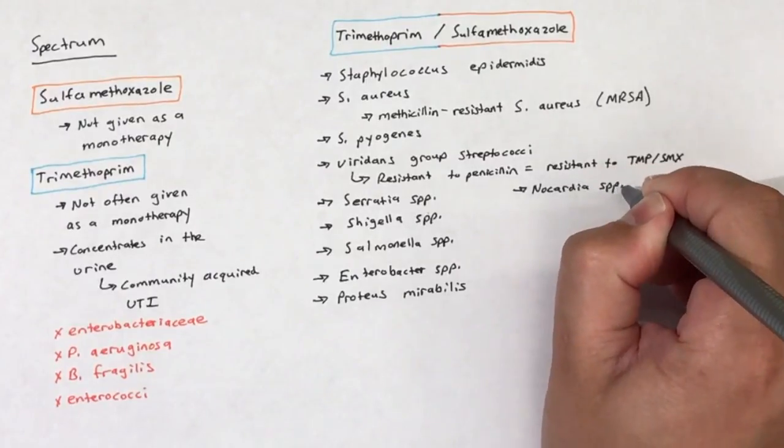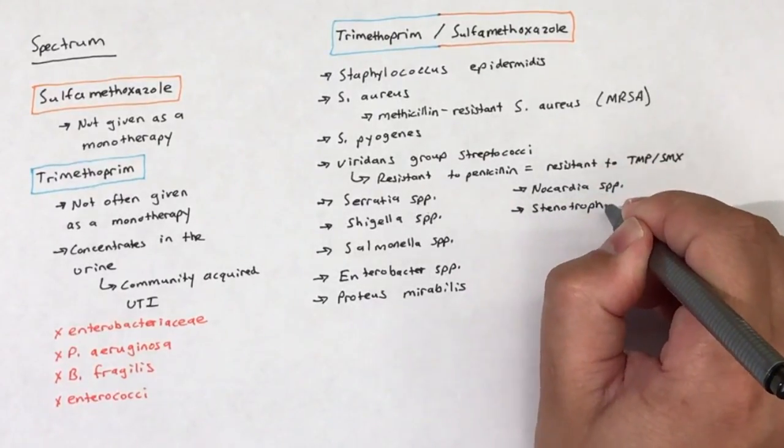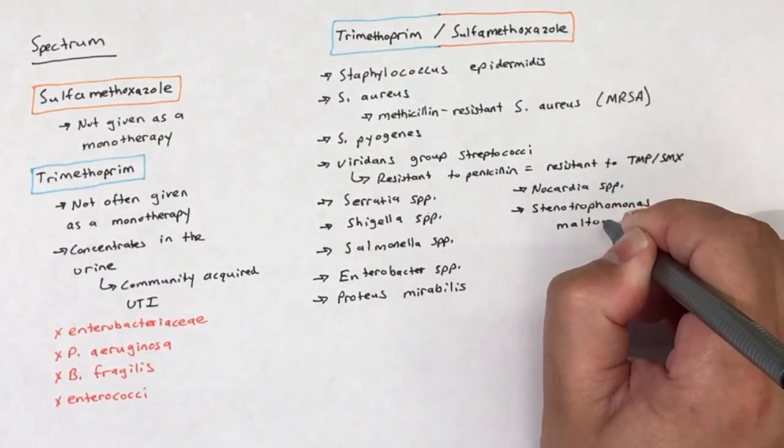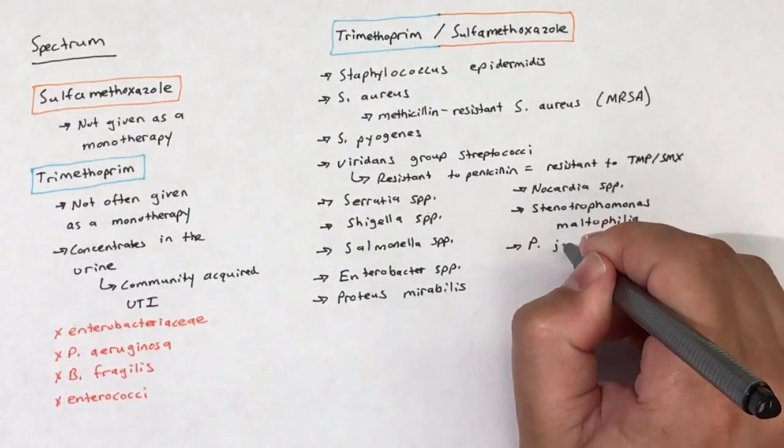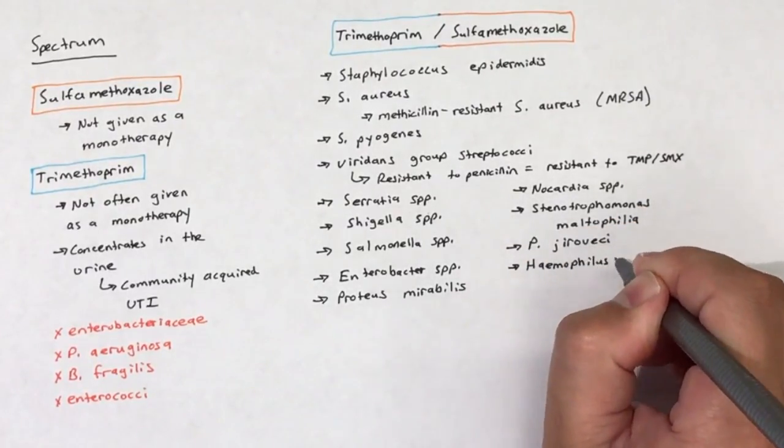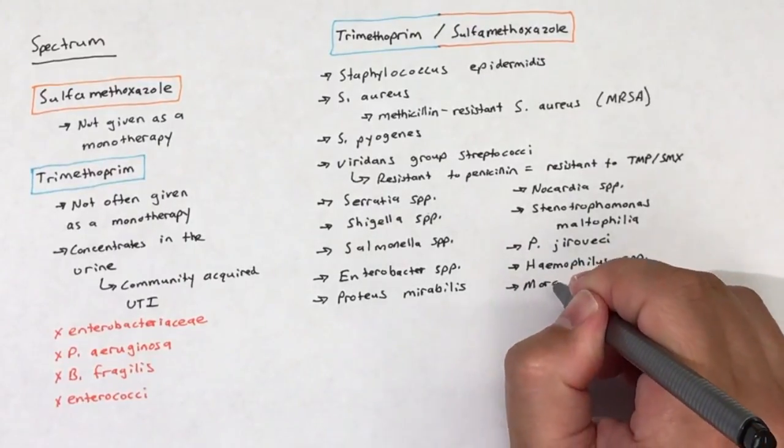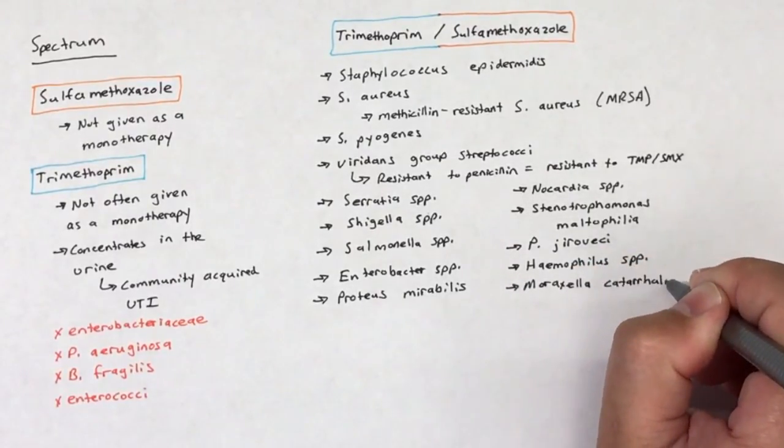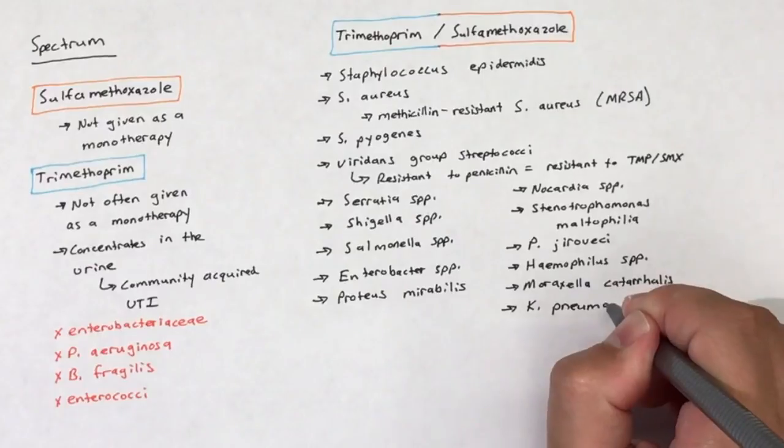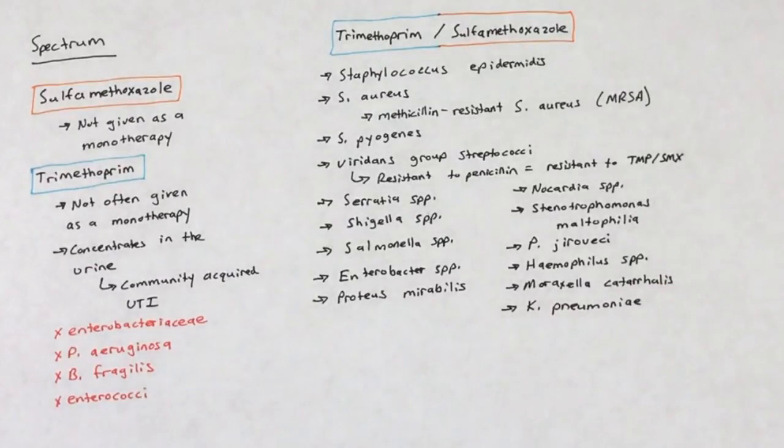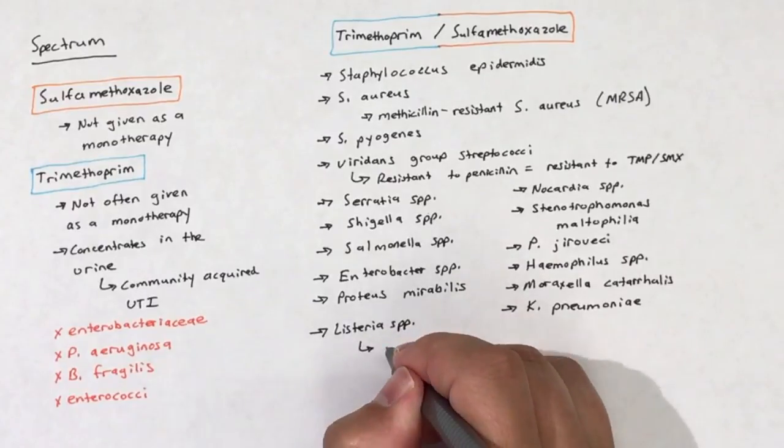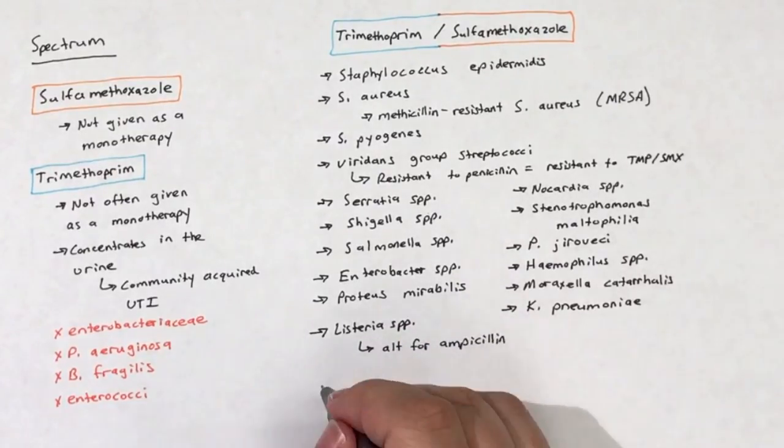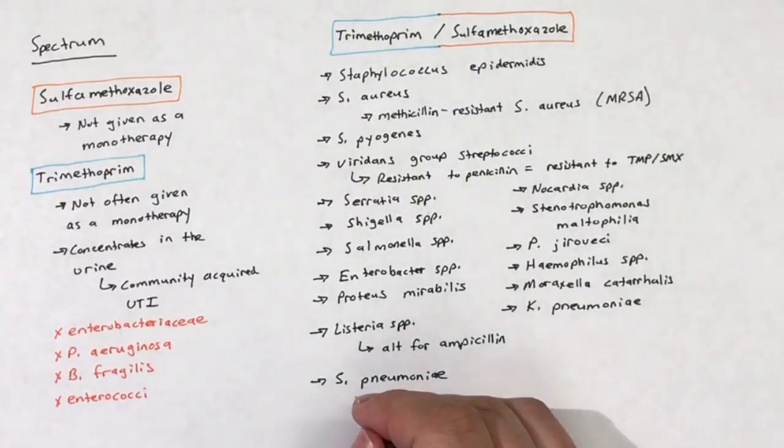Additionally, TMP-SMX is active against Nocardia species and Stenotrophomonas maltophilia. TMP-SMX is also used in the treatment of P. jirovecii pneumoniae and to treat other respiratory tract pathogens, including Haemophilus species, Moraxella catarrhalis, and K. pneumoniae. TMP-SMX is also an alternative treatment for Listeria species in patients that cannot tolerate ampicillin.